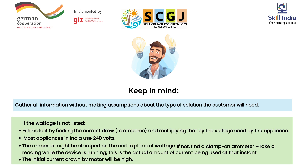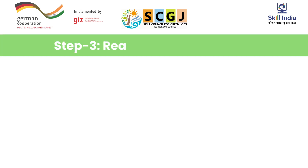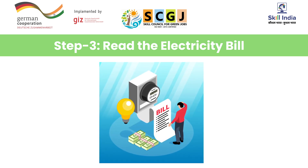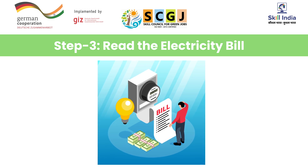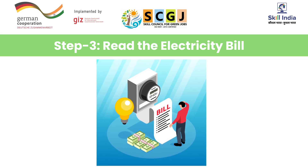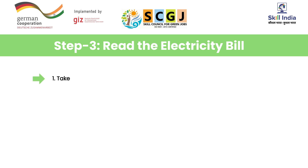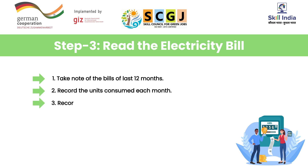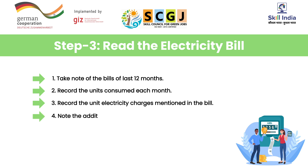Bills play a significant role in gathering information regarding power usage of the customers. To gather clear and concise information, adopt this method: try to capture the bills of at least the 12 most recent months. Record the units consumed in each month and the unit electricity charges mentioned in the bill. Also note the additional surcharges that have been applied by the distribution company. This will be useful when later explaining the payback to the consumer.